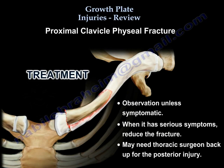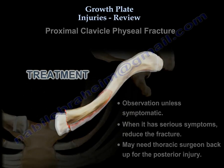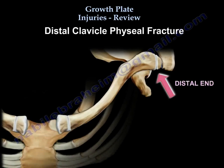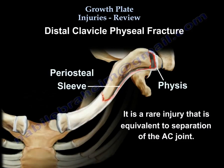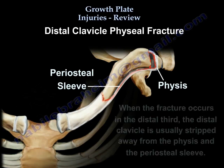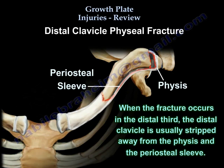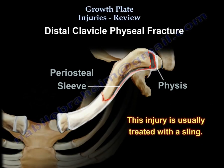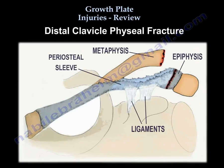Treatment: observation if less symptomatic; you may reduce the fracture and may need thoracic surgeon backup for a posterior injury. The distal clavicle physial injury is a rare injury, equivalent to AC separation — it looks like an AC separation but really isn't. When the fracture occurs in the distal third, the distal clavicle is stripped away from the physis and the periosteal sleeve, called a sleeve fracture. The injury is usually treated as Salter-Harris type 2.